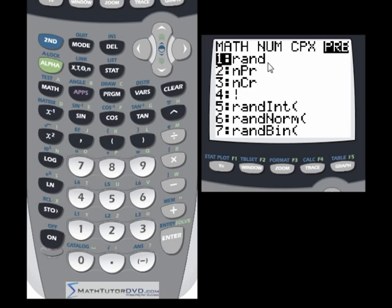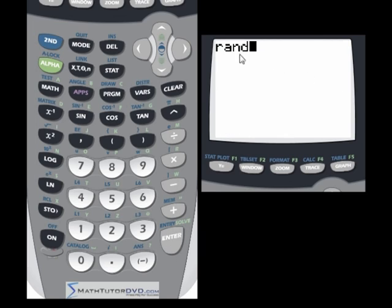The first one is generating a random number. A lot of times you're dealing with statistical things or things in probability and you want to generate a quick random number. So you can hit number one and the random number expression is going to pop up there. You hit enter and out is going to spit a random number between zero and one. In probability, all of your probabilities are going to be between zero and one, so it's useful to be able to generate random numbers. If you ever need a random number generator, there it is.